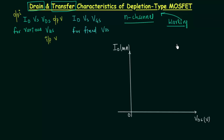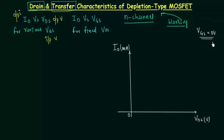Starting at the origin, we begin with VGS equal to 0 volt. In N-channel depletion type MOSFET, the channel is already present, so like a JFET we can start with VGS = 0V. There is no need to enhance the channel. When VGS = 0V and we increase VDS, the drain current ID will increase.